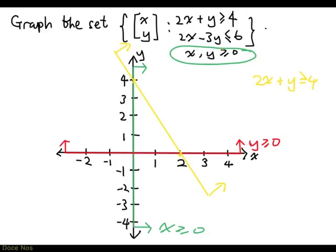Now, by the same reasoning, we can draw 2x minus 3y less than 6. So let's first draw 2x minus 3y equal to 6. That's just a line. When y is 0, x is 3. And when x is 0, y is minus 2.